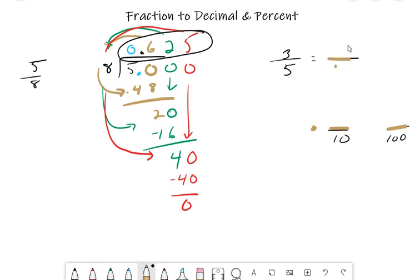So if we can get this over 10, then we know that would be our decimal. So 5 times 2 is 10, 3 times 2 is 6. So this is 6/10, or 0.6. That 6 ends in the tenths place, so that's your decimal: 0.6.